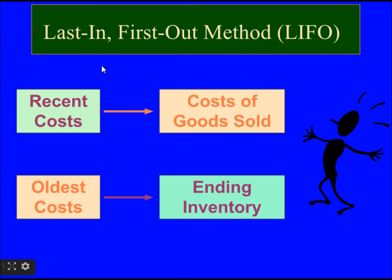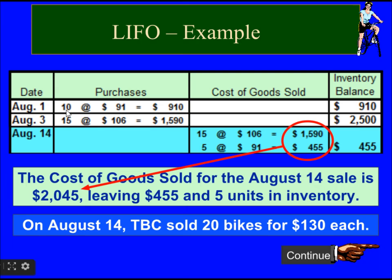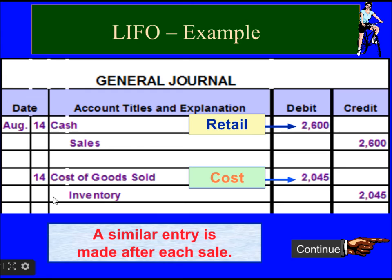Last in, first out (LIFO) is the reverse of FIFO: the most recent cost is used to calculate cost of goods sold, and the oldest cost is used to calculate ending inventory. Whenever there is a sale, we use the last purchase first. August 3 was the last purchase at $106, so the first 15 items sold have cost of goods sold calculated at $106 per unit: 15 multiplied by $106 gives $1,590. The next 5 units use the previous purchase at $91: 91 multiplied by 5 equals $455. Total cost of goods sold is $2,045, and we record the journal entry accordingly.